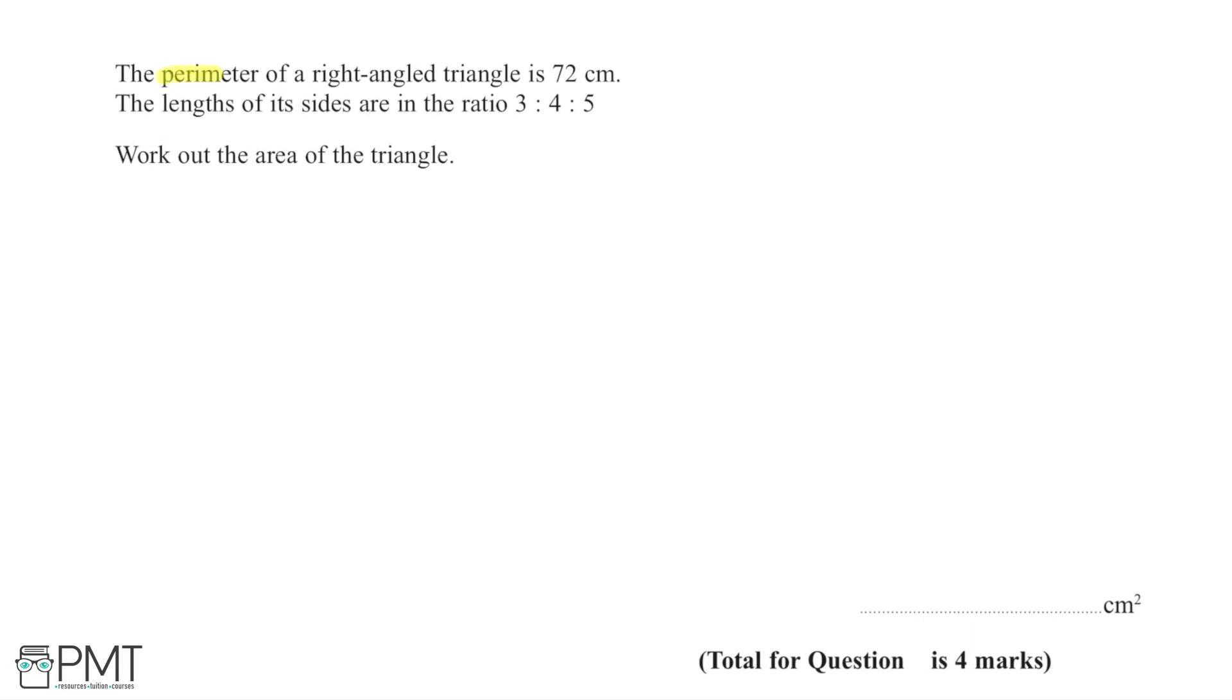The perimeter of a right-angled triangle is 72cm, and the lengths of its sides are in the ratio 3:4:5. I'm asked to use this information to work out the area of the triangle.